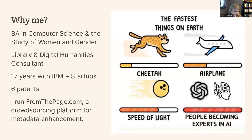From the Page is our crowdsourcing platform. We have about 100 institutions that run projects on it for transcription, metadata description, indexing, and photo identification. Because it's a crowdsourcing platform, we think hard about the human and the technology. We're software engineers, but we're also building a platform that people — often retirees who are very passionate about history and genealogy — are partnering with institutions to turn digital images into searchable, accessible text. So I try to bring that empathy to thinking about how ChatGPT and AI more broadly will affect all of us.